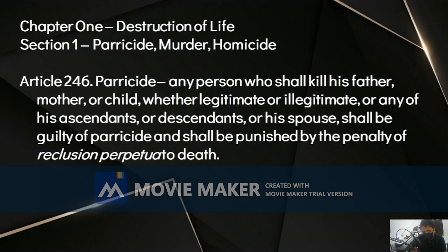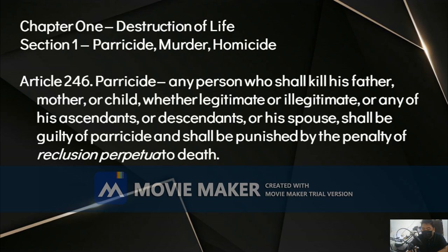Only relatives in a direct line — going up or down — are considered in parricide, except the spouse. Article 246 mentions father, mother, or child — the first two being ascendants of the latter. Whether illegitimate or legitimate, only blood relatives may qualify. Ascendants or descendants must be legitimate. Therefore, an adoptive father, adoptive son, father-in-law, or son-in-law is not included in parricide — they must be blood relatives.